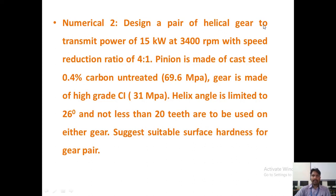Design a pair of helical gears to transmit power of 15 kW at 3400 rpm with a speed reduction ratio of 4:1. The pinion is made of cast steel 0.4% carbon untreated with an allowable design stress of 69.6 MPa. The gear is made of Grade I cast iron with allowable stress of 31 MPa. Helix angle is limited to 26 degrees, and not less than 20 teeth are to be used on either gear, so Z1 equals 20 teeth on the pinion.